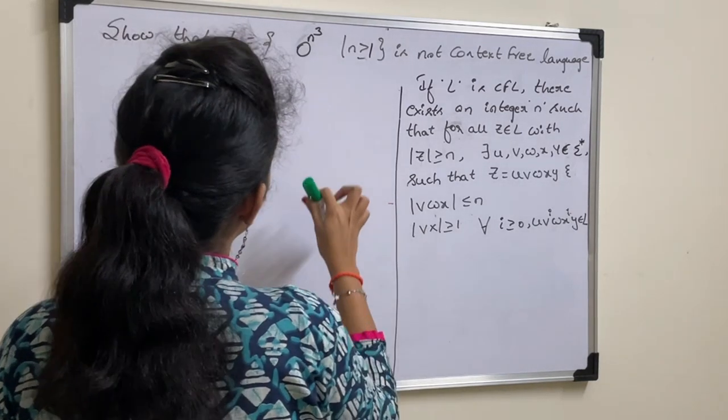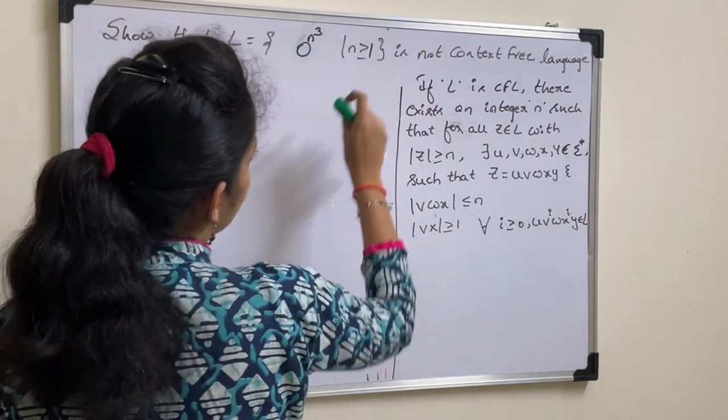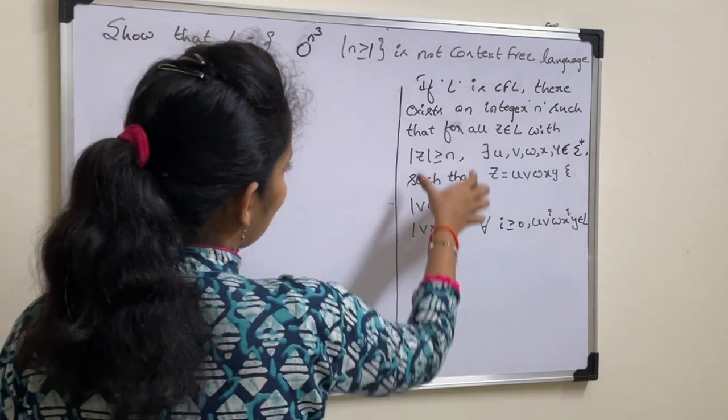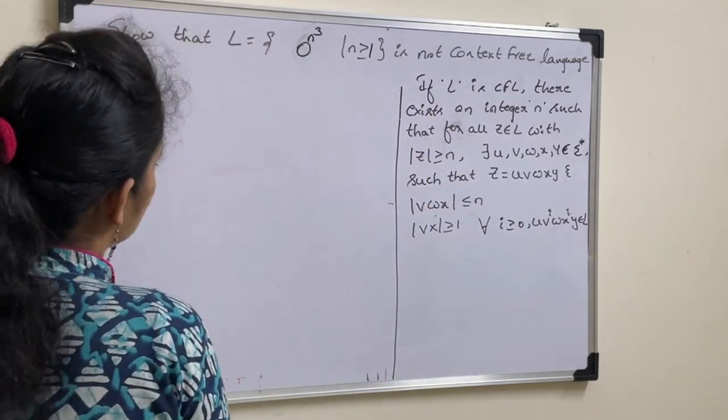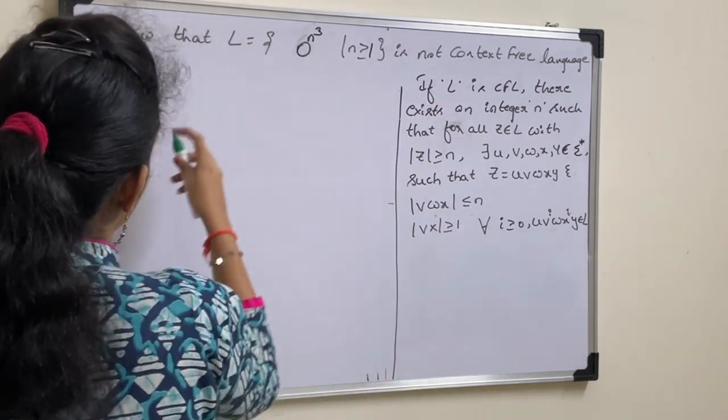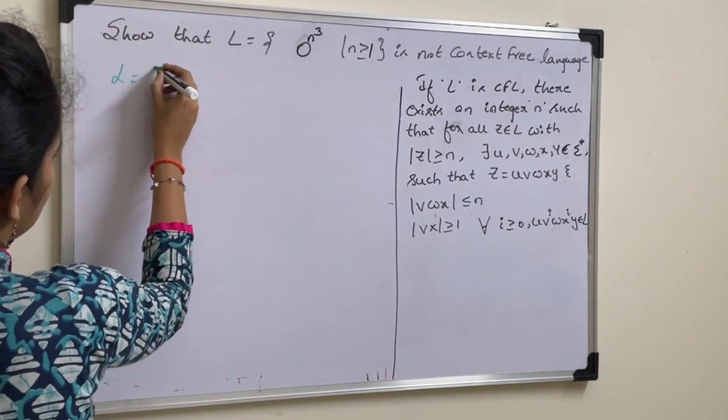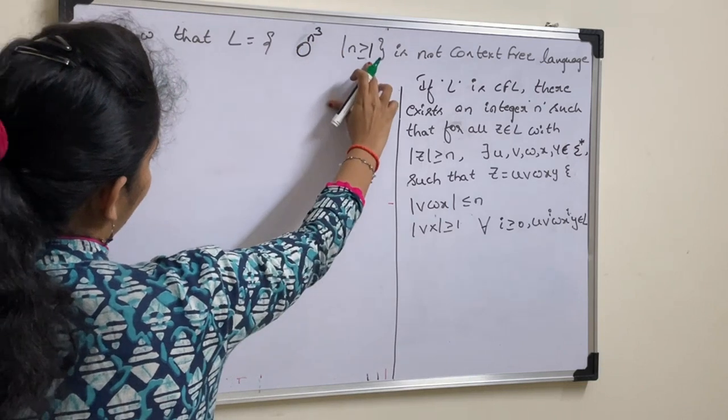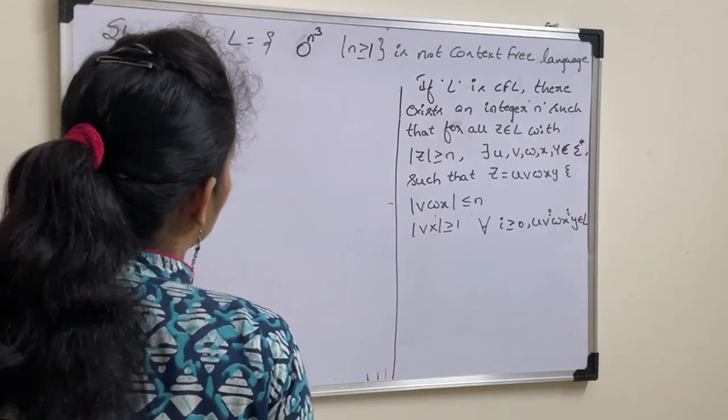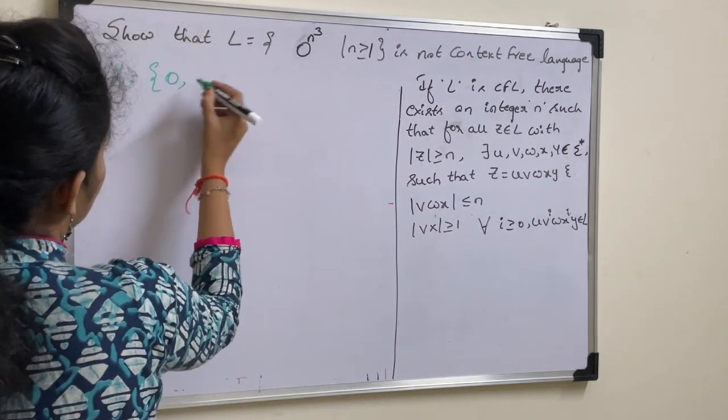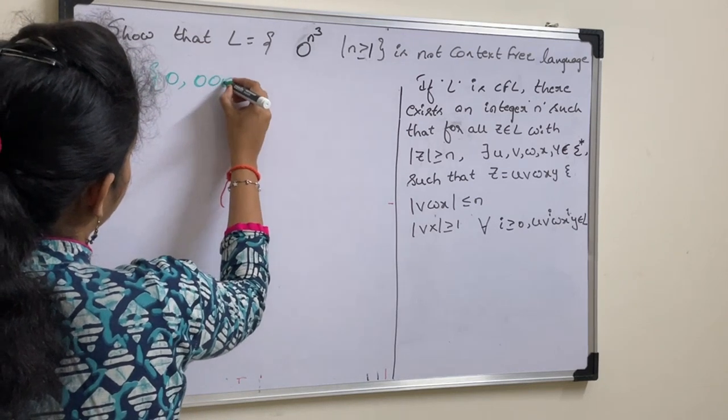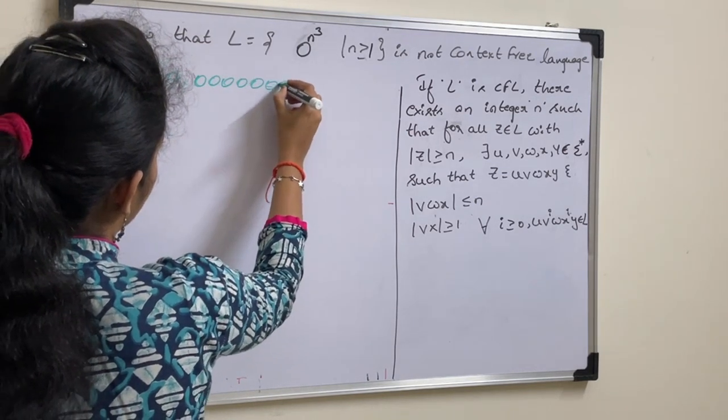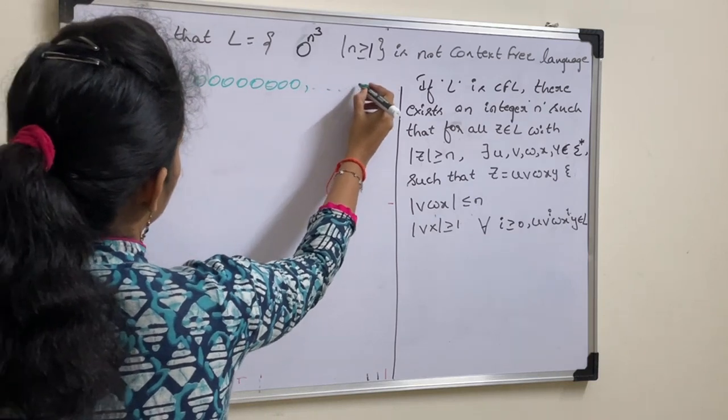In this example, we will prove that this language is not a context free language using the given conditions. First let us derive strings from this language. Language n equal to 0 power 1 cube as n value is greater than or equal to 1, 0 power 2 cube and so on.